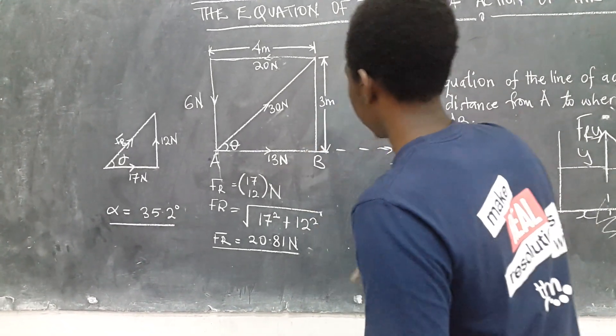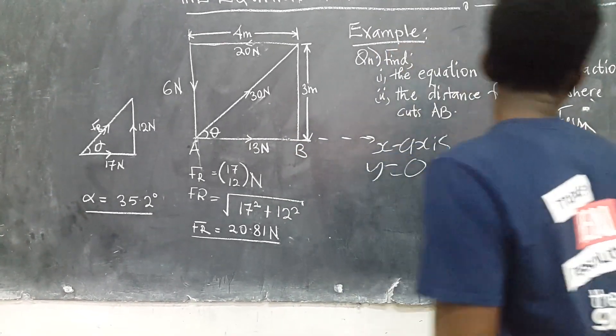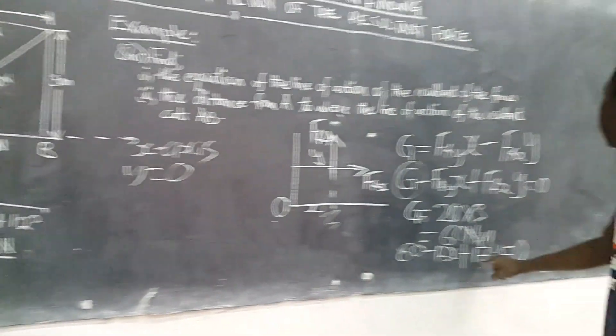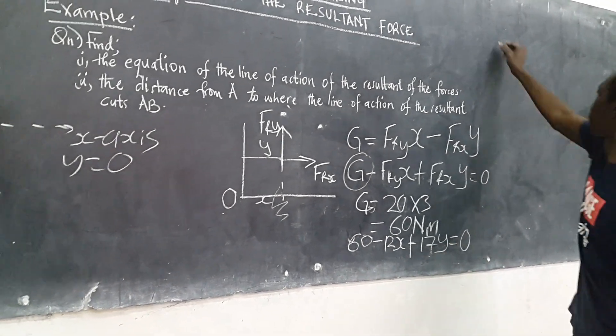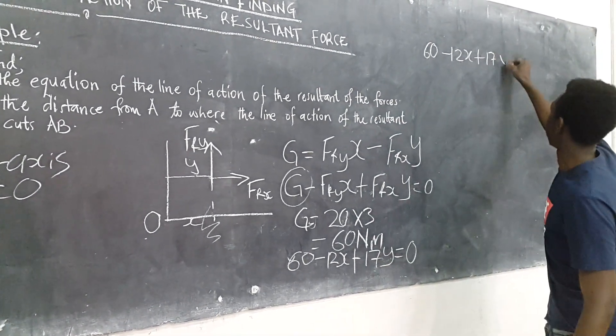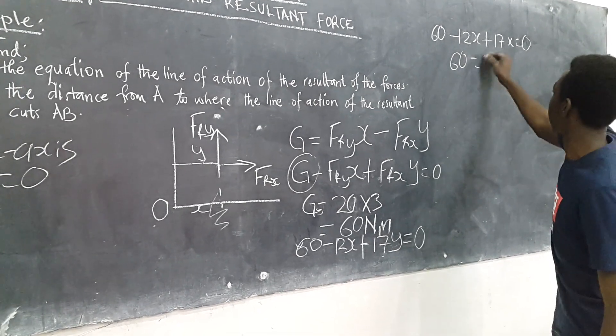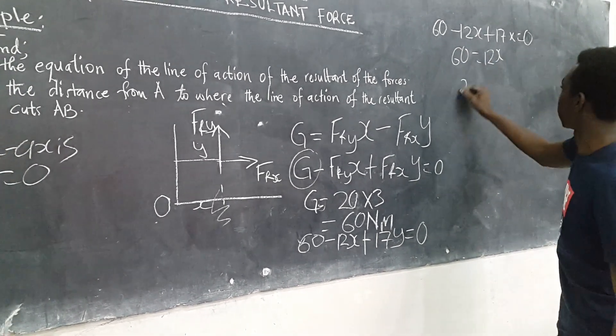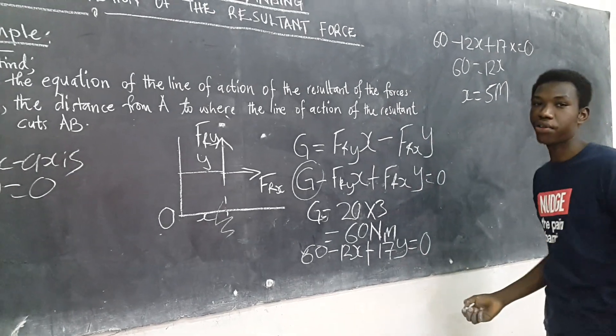And at the X-intercept Y is equal to 0. So we shall find the point where Y is equal to 0. So substitute Y is equal to 0 in this equation: 60 minus 12X plus 17 times 0 equals 0. Then 60 is equal to 12X and X is equal to 5 meters. Thank you.